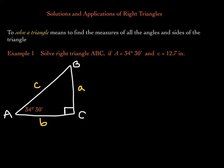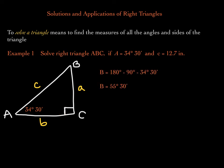Angle C is 90 degrees. I noticed that our textbook puts the right angle at angle C each time. One angle is given as 90 degrees because it's a right triangle. This angle is given, and so we need angle B. The sum of the three angles within any triangle must be 180 degrees, so we can subtract angle A and angle C from 180 to leave us with angle B. We find that angle B is 55 degrees and 30 minutes. We now have all the angle measures.